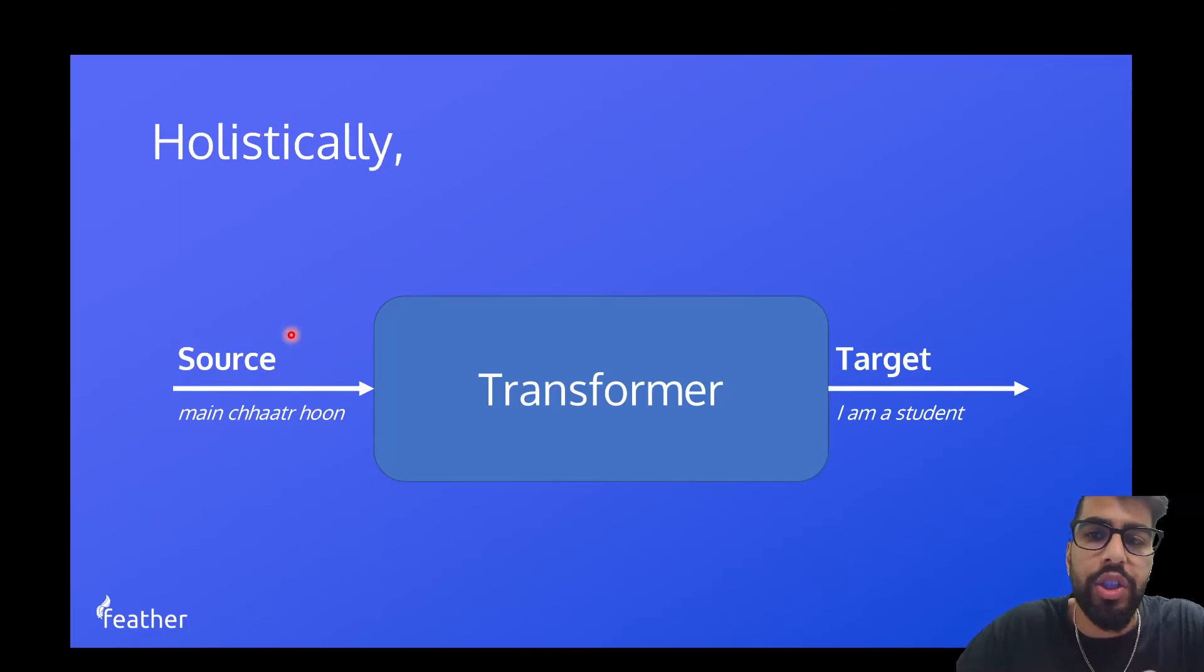So generally speaking in NLP, we have source, which is our input, and target, which is our output. So our target language is English, and our target sentence for this particular source sentence is 'I am a student.' Now let's just think of the transformer as a black box here. Okay, we feed in some input and we decode an output.